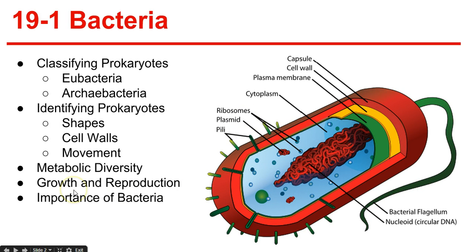Growth and reproduction. One way bacteria reproduce is binary fission. When a bacterium has grown so that it is nearly doubled in size, it will replicate its DNA and divide in half, producing two identical daughter cells. There's also conjugation, when a hollow bridge forms between two bacterial cells and genes move from one cell to another.